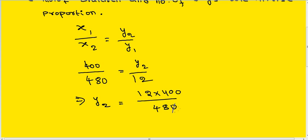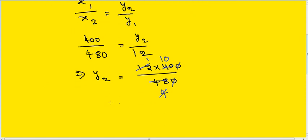Cancel the zeros: 12 into 400 divided by 480. Simplifying, this gives y2 equals 10. Therefore, y2 equals 10 days.